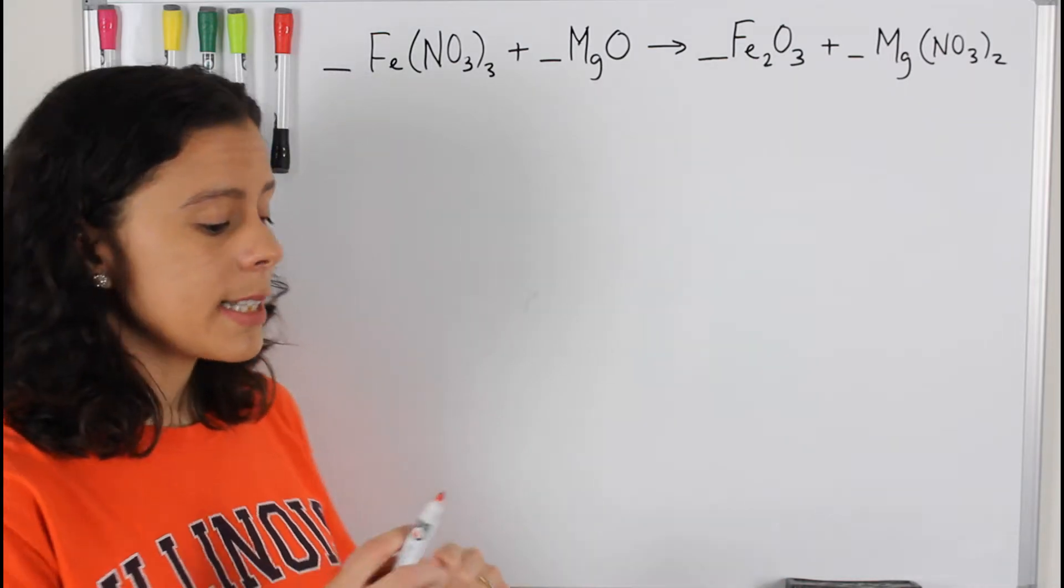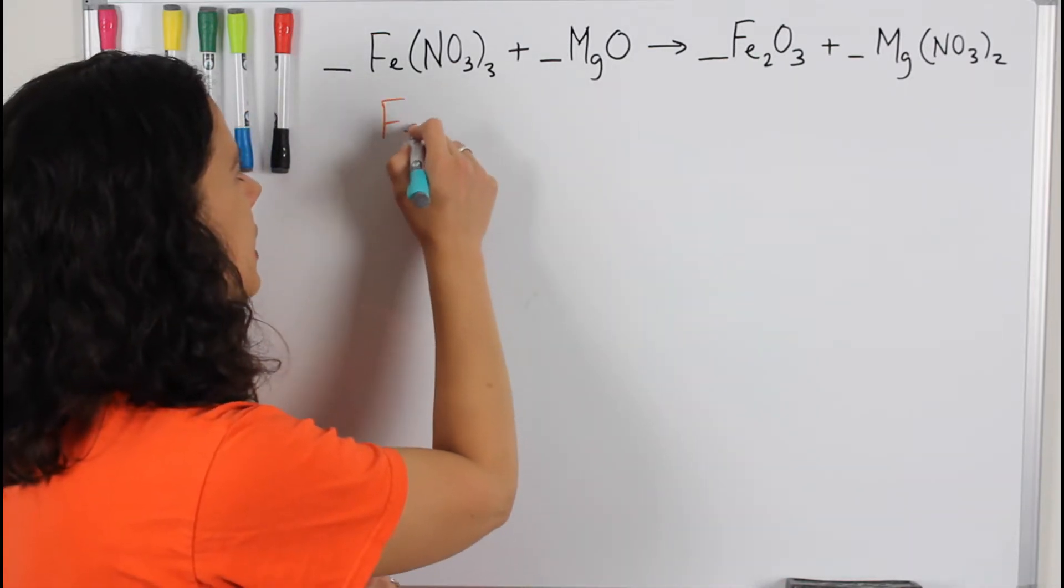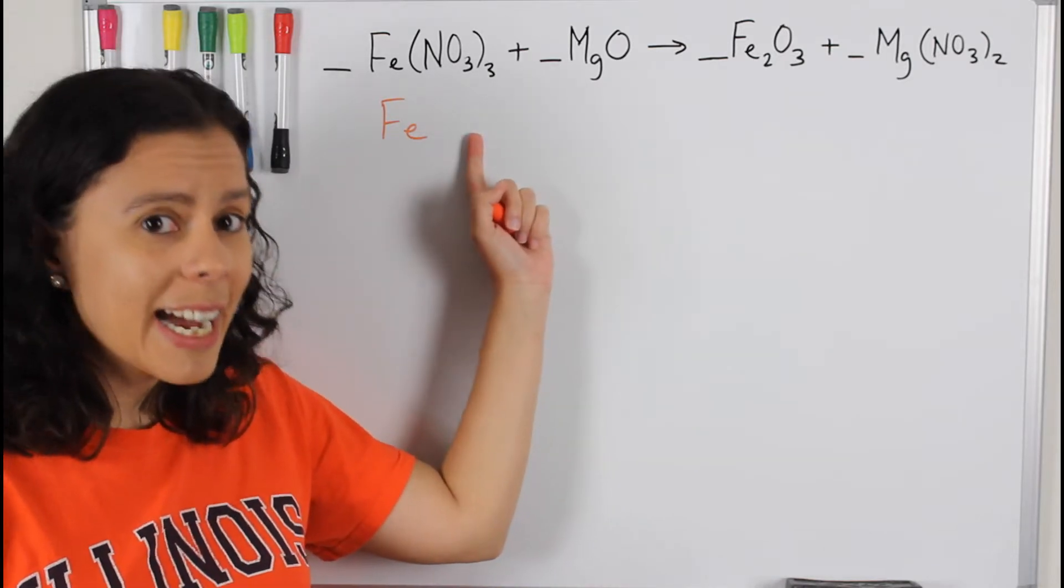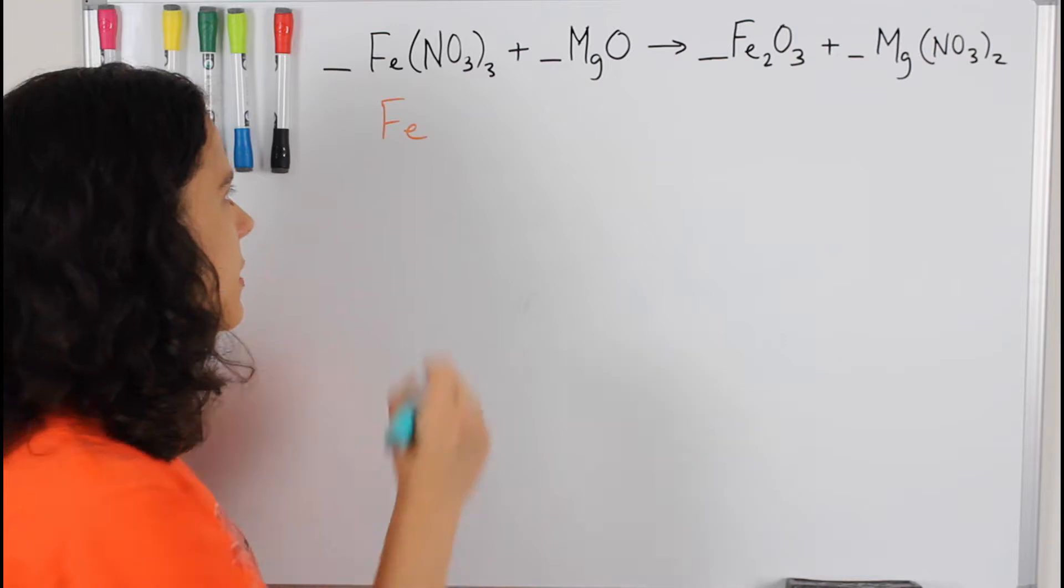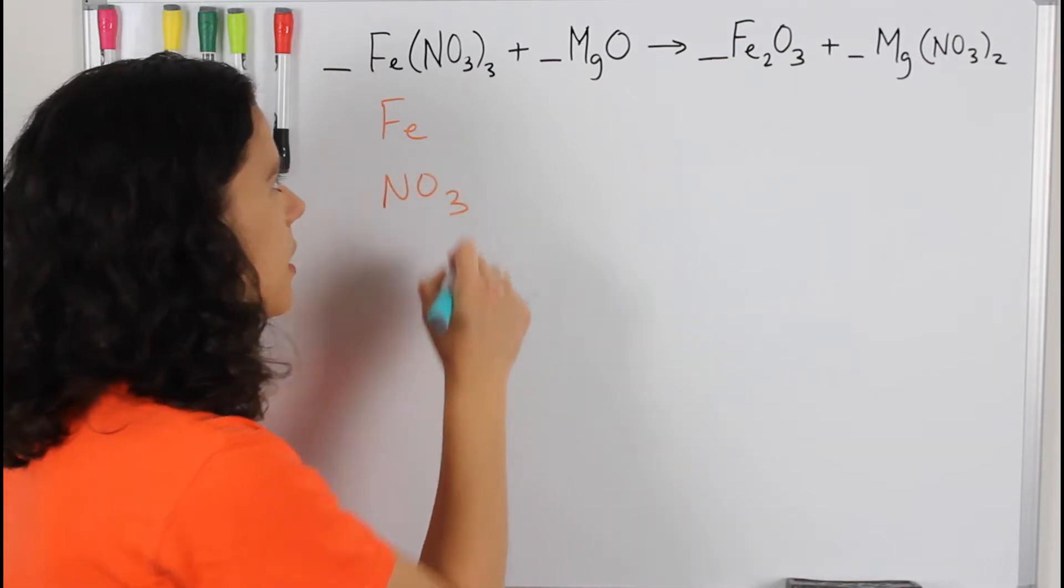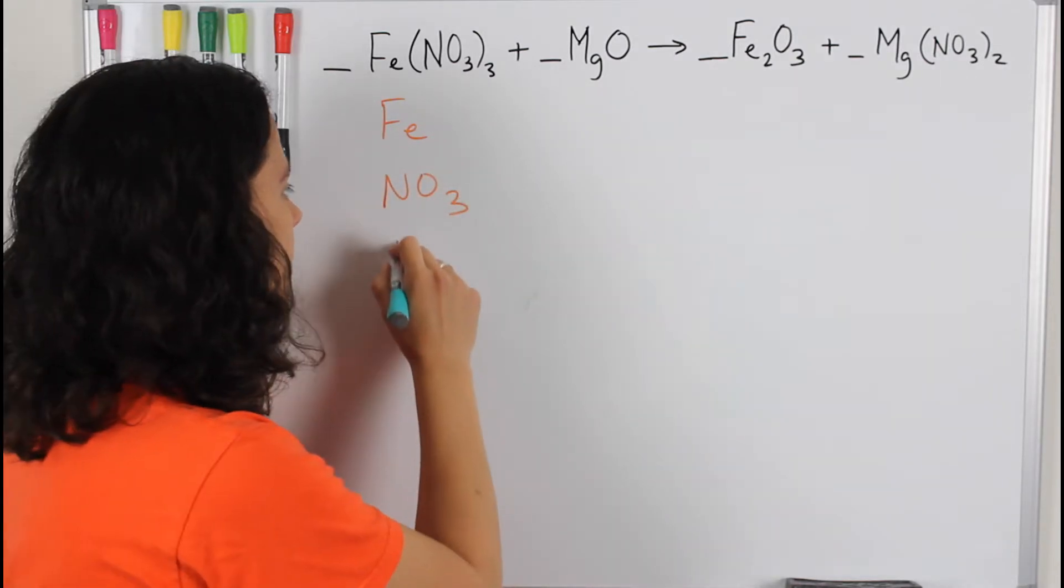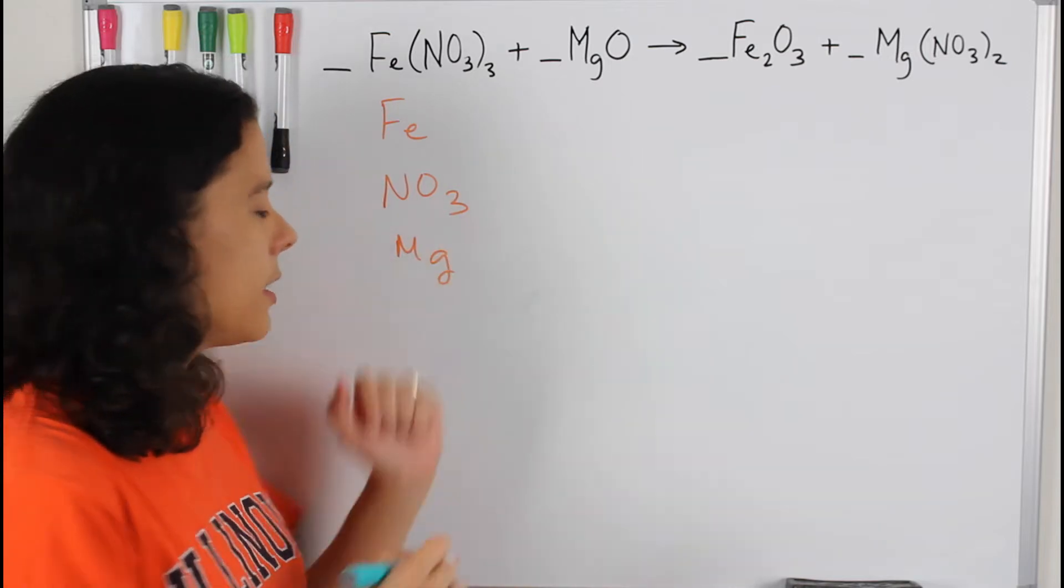So the first thing I'm going to write is iron. Then I'm going to write nitrate. I'm not going to write nitrogen and oxygen. I'm just going to write nitrate. Then I'm going to write magnesium and oxygen.